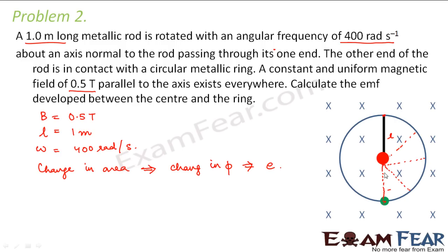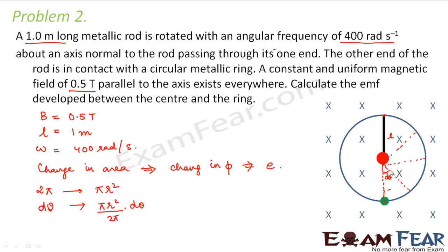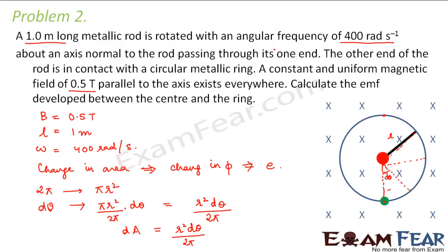Let us calculate the change in area. Consider a small area corresponding to a small angle dθ. The full angle 2π corresponds to the entire area of the circle, that is πr². So dθ corresponds to πr²/(2π) × dθ, which simplifies to r²dθ/2. So the change in area dA is given by r²dθ/2.